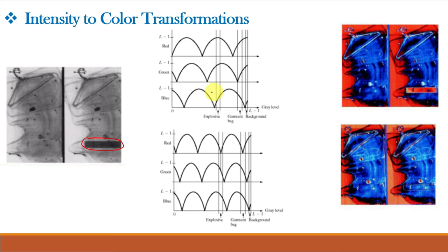For this above transformation functions, you can see that the intensity level of the explosive and the background is quite different in the grayscale image. But they both were coded with approximately the same color. Why? Because the periodicity of the sine waves is similar. This is similar to this. This is similar to this. And this is similar to this. Due to this, the explosive is easily visible in the output image.